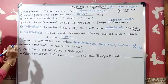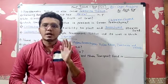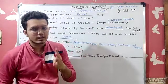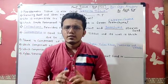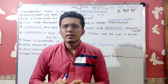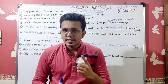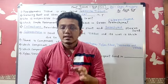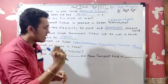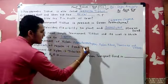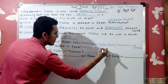Which component of phloem is dead? Phloem has four components in the textbook: phloem parenchyma, phloem fiber, sieve cells, and companion cells. Among these, fiber is dead — so phloem fiber is the answer.